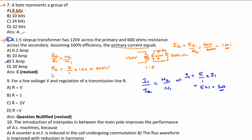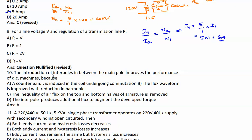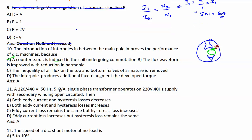Next question is nullified - those who answered will get one extra mark. Next: The introduction of interpoles in between the main poles improves the performance of the DC machine because counter EMF is induced in the coil undergoing commutation. In DC machines we have poles, and in between we use interpoles. The interpoles produce counter EMF induced in the coil undergoing commutation. The answer is A.